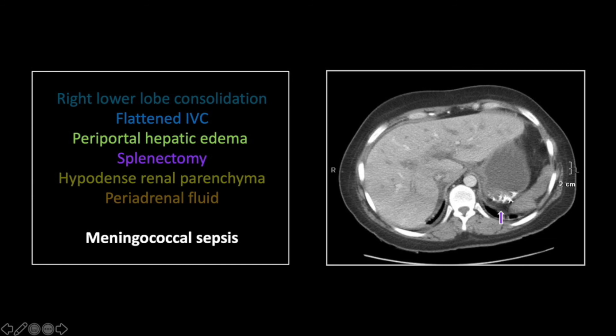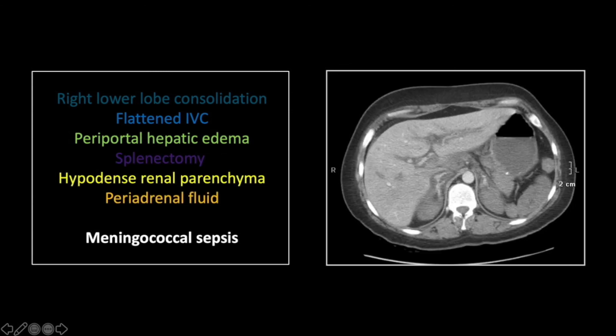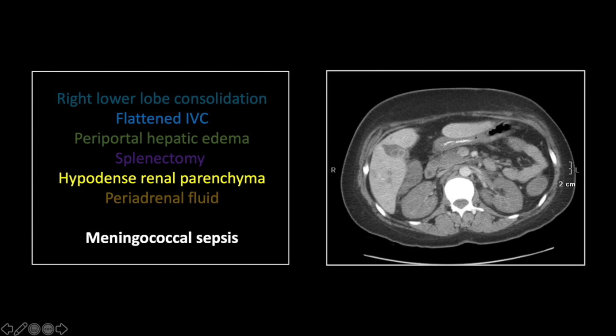Lower down, you can see again the flattened IVC, periportal edema, and markedly hypodense kidneys related to hypoperfusion. You can also see increased density within the adrenals with periadrenal stranding, most likely representing underperfusion and enhancement, or possibly intraparenchymal hemorrhage, as is frequently described with Waterhouse-Friderichsen syndrome. Farther down, you can again see the flattened IVC and the markedly underperfused kidneys.